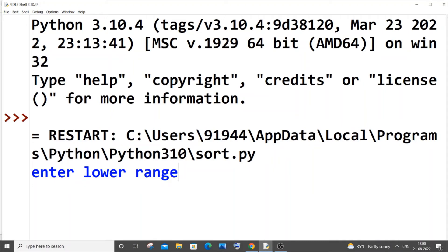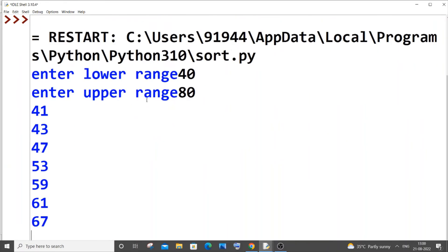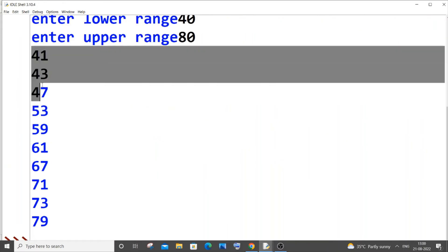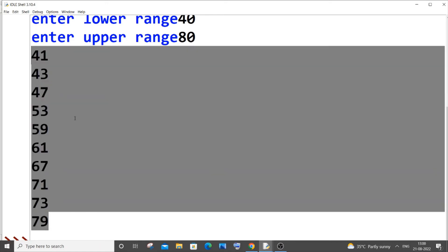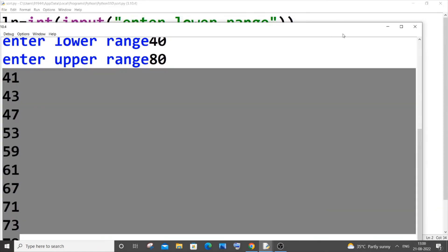Let me just now run it. It's asking me to enter the lower range, I will go with something as 40 and upper range as 80. So I'm getting 41, 43, these are all prime numbers, you can just verify it. These are basically prime numbers.